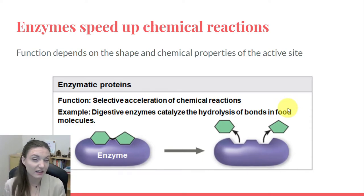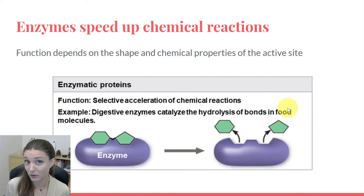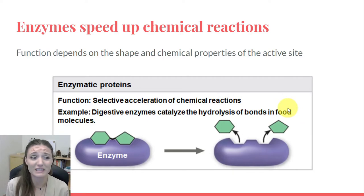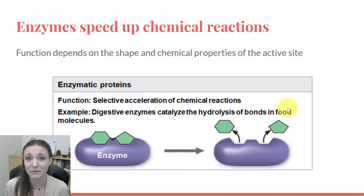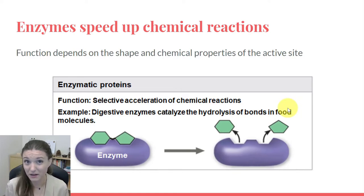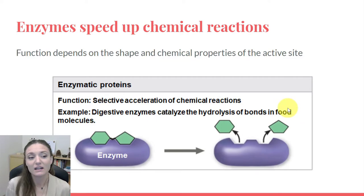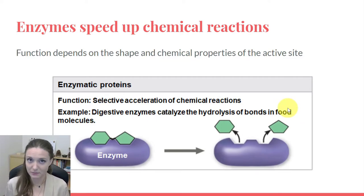The key thing is that enzymes are very specific to the types of molecules they work with. They only work with very specific substrates, because their function depends on the shape and the chemical properties of their active site. The active site is where the substrate bonds to — it's where the actual chemical reaction happens. So that active site is very specific to a substrate.